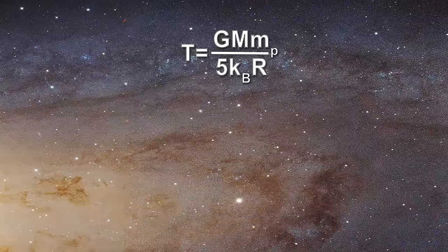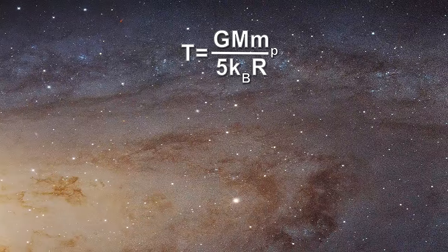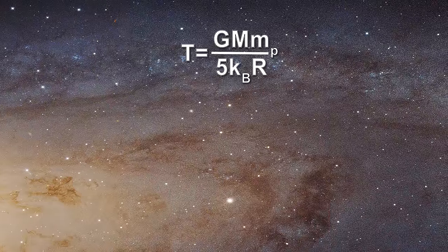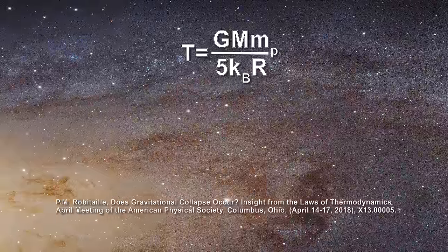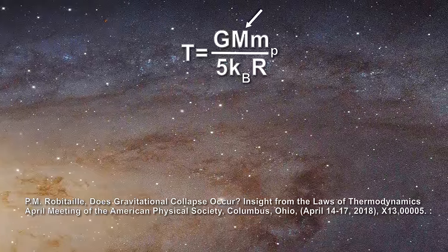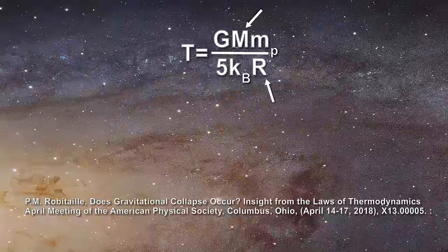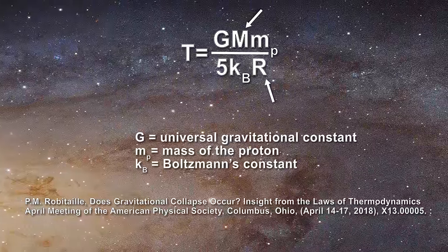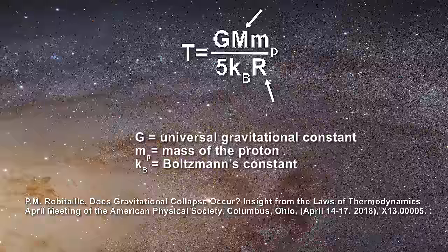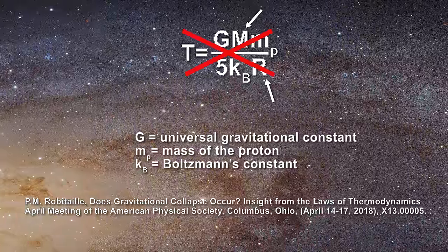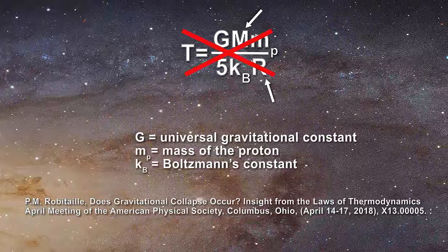According to the zeroth and second law of thermodynamics, temperature must be intensive. But as I mentioned in my APS talk, this expression for temperature is being governed by mass, an extensive property, and by radius, which is neither extensive nor intensive. The other symbols all represent constants. As a result, this expression by Eddington, Jeans, and Chandrasekhar is not valid and physics should have rejected it years ago.